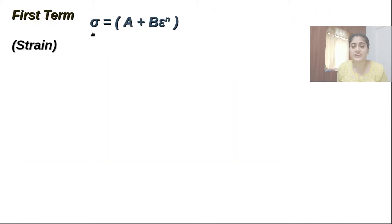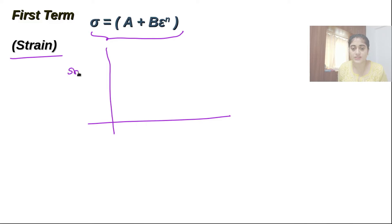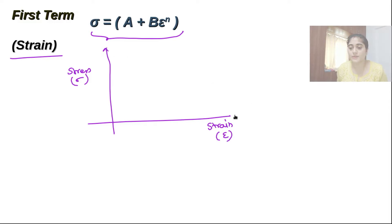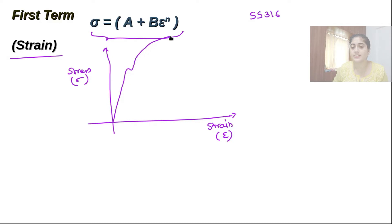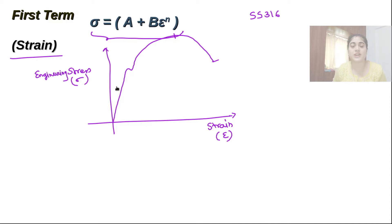Now the first bracket shows the strain effect. There is a stress-strain graph — sigma on the y-axis and epsilon (strain) on the x-axis. For stainless steel SS 316, the graph goes up to rupture at the ultimate stress position. This is engineering stress versus engineering strain from experiment, but actually we use true stress versus true strain graph, which keeps on increasing without going down.